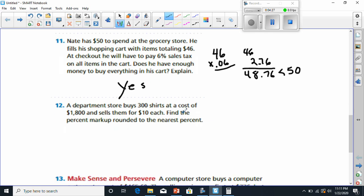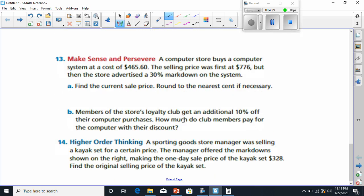And going down to number thirteen. The store, computer store, excuse me, buys a computer system for $465.60. The selling price was $776, but then the store advertised at 30% markdown. So if we do a 30% markdown, it's going to be 776 times 0.3.